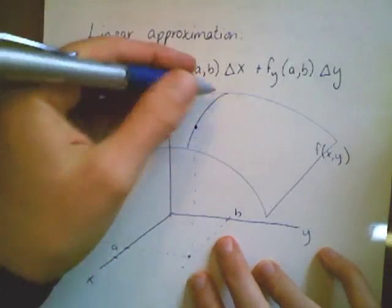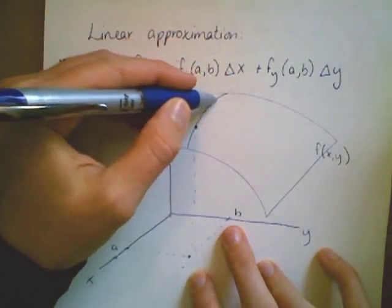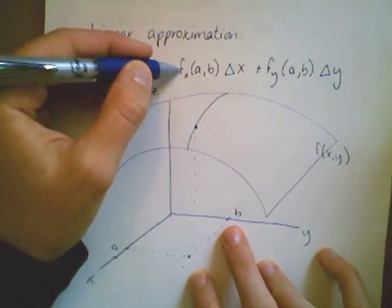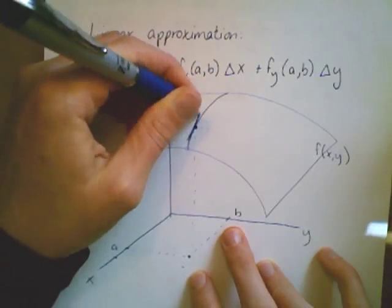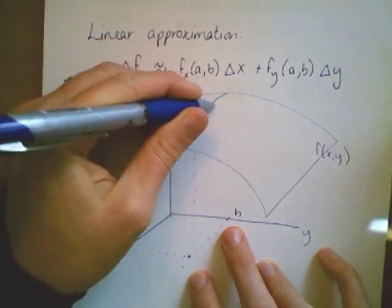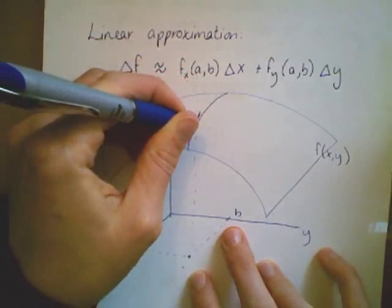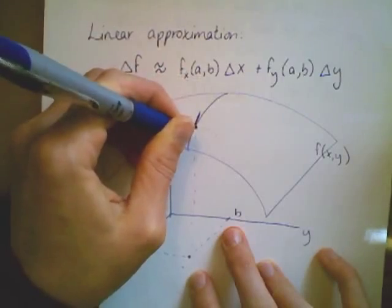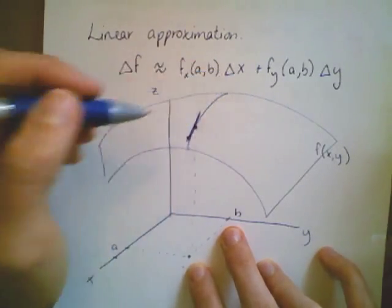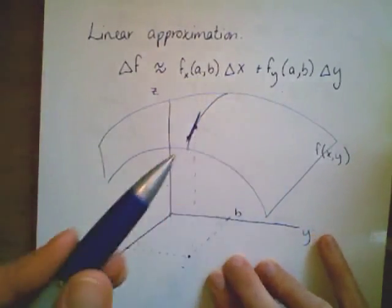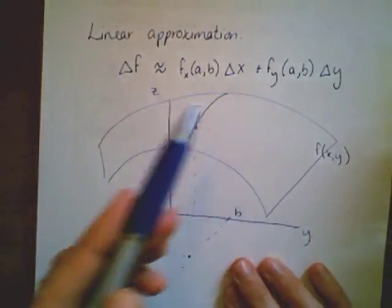How much am I going up or down? It's given by the slope along this curve. This is my curve traced out by the vertical trace where y equals b. The partial derivative with respect to x is the slope of the tangent line. So instead of following along this curve, I follow along the tangent line some distance delta x.